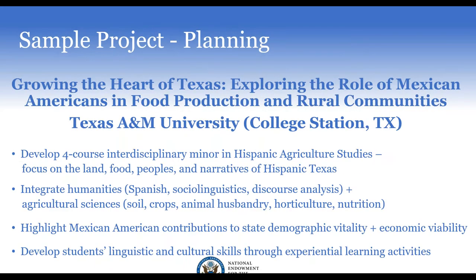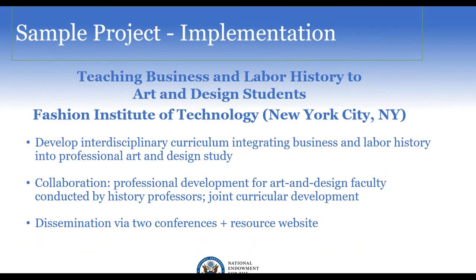Another sample project comes from Texas A&M, a large public land grant institution with about 54,000 undergraduates. They created a new minor in Hispanic Agricultural Studies, developed jointly by faculty from Hispanic Studies and Horticultural Sciences — a four-course interdisciplinary minor focusing on the land, food, peoples, and narratives of Hispanic Texas. It integrated humanities including Spanish, sociolinguistics, and discourse analysis with agricultural sciences: soil, crops, animal husbandry, horticulture, and nutrition.